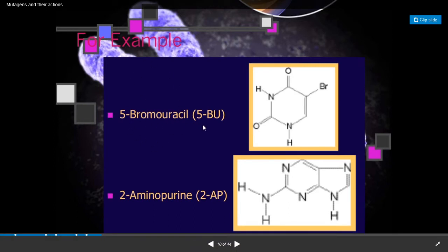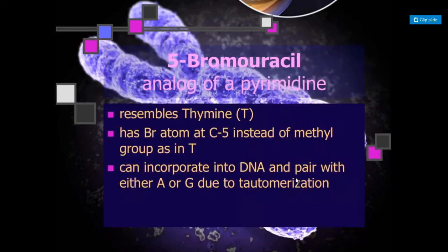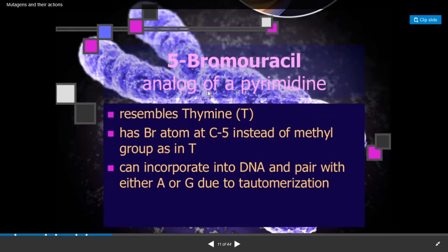Examples of base analogues: one is 5-bromo-uracil, in short 5-BU, and second is 2-aminopurine, that is 2-AP. These are the structures of 5-bromo-uracil and 2-aminopurine. Both of these mutagenic agents are base analogues — they are structurally similar to the purines and pyrimidines.